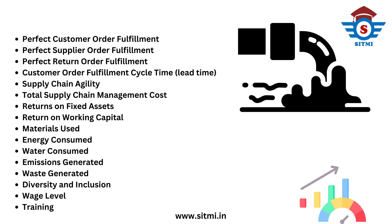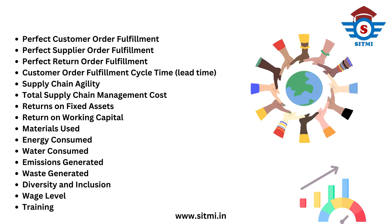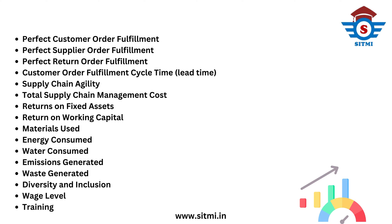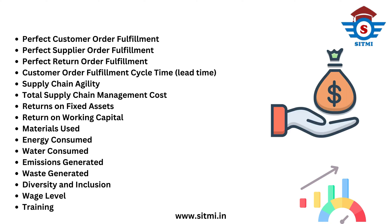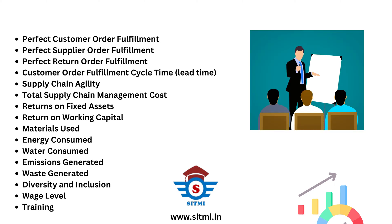It also measures how much emissions are generated, basically in the form of CO2, and how much waste is generated through manufacturing or logistics activities. It also measures diversity and inclusion based on gender, age group, or other indicators, along with wage levels of supply chain staff and training — meaning the number of hours of training conducted or number of skills built by supply chain professionals.